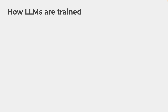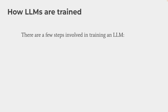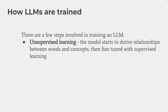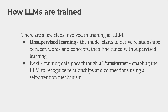This training process has a few steps involved. The first step is what we call unsupervised learning. At this stage, the model starts to learn the relationships between words and concepts. What comes after that is the fine-tuning of the model, which happens once we have what we call supervised learning. So after the first stage, we go to the next training stage where the training data goes through a transformer.